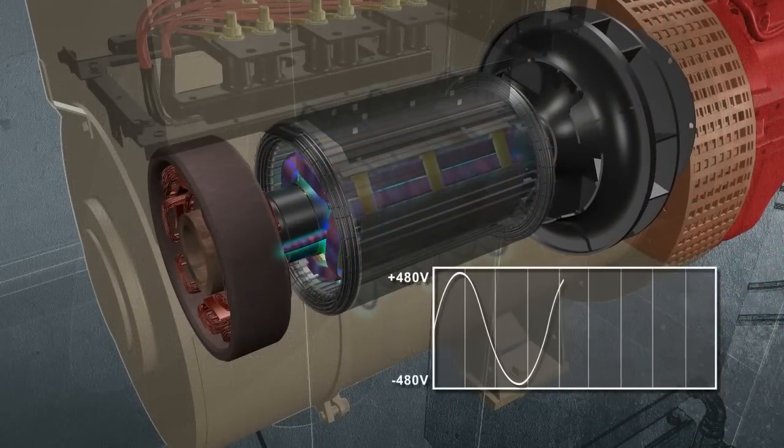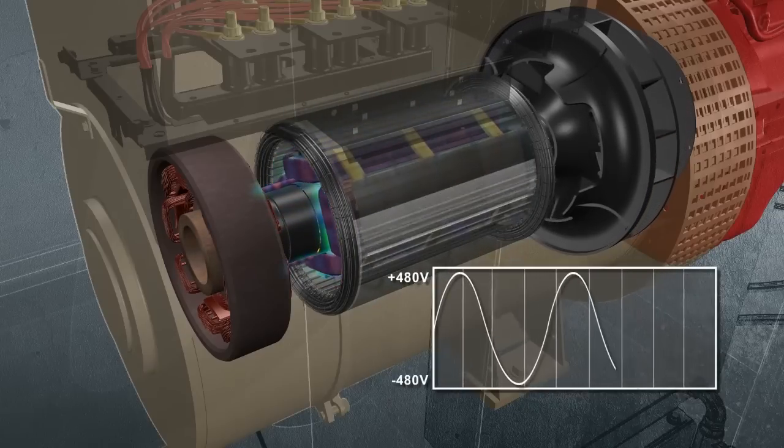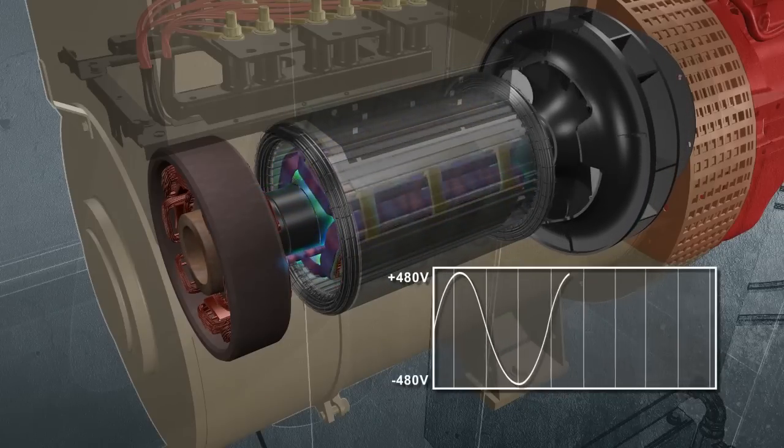Because the magnetic field builds and subsides, voltage fluctuates between positive and negative peaks, which is known as alternating current. The stronger the field, the higher the peaks.